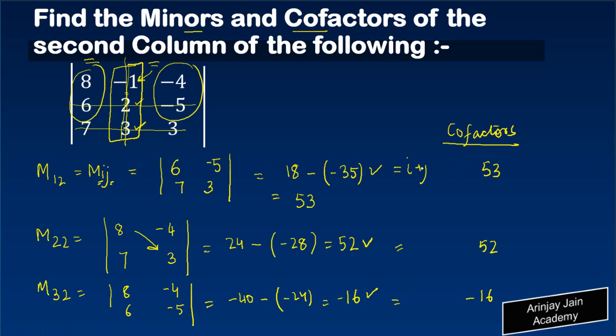So in this case, i plus j, which is the row 1 plus 2, equals 3. Since 3 is an odd number, 53 will be negative 53, because if it is odd then we multiply the value of the minor by minus 1.